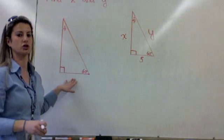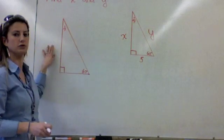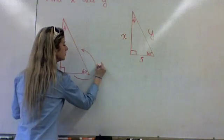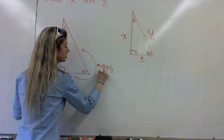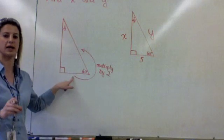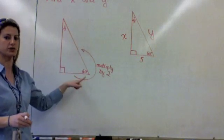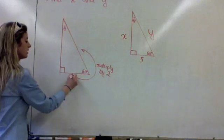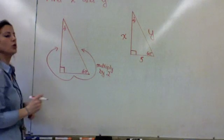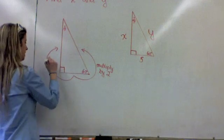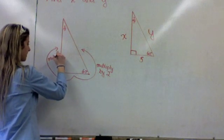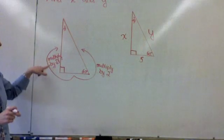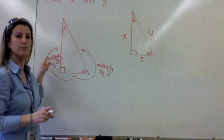Let's start with if we're given the short leg. To move from short leg to hypotenuse, we just multiply by 2 — we simply double it. So whatever the short leg is, the hypotenuse is double that. To move from the short leg to the long leg is also pretty easy — we just multiply by root 3. So whatever the short leg is, to get the long leg, you multiply that number by root 3.